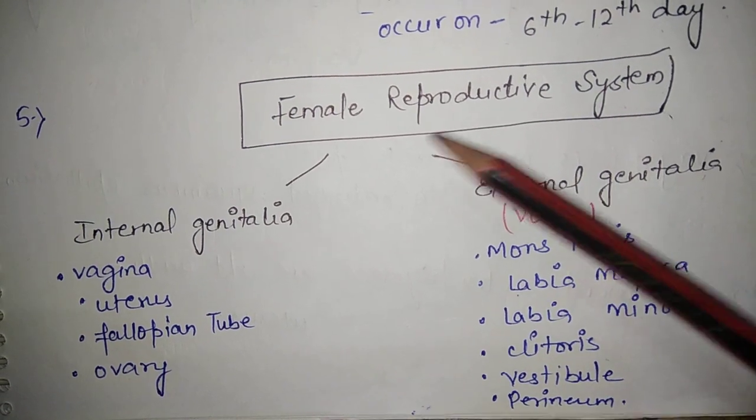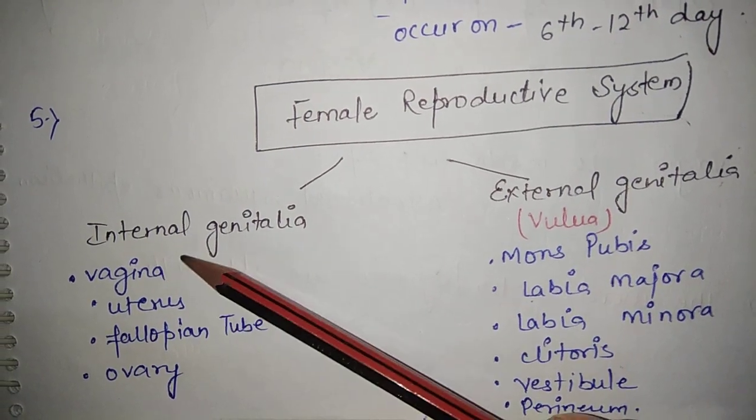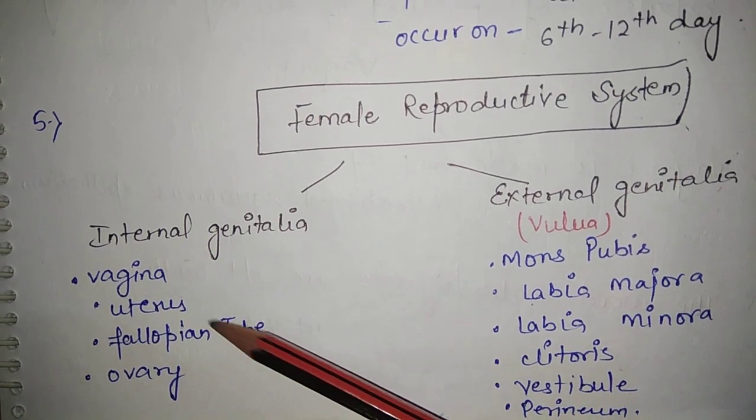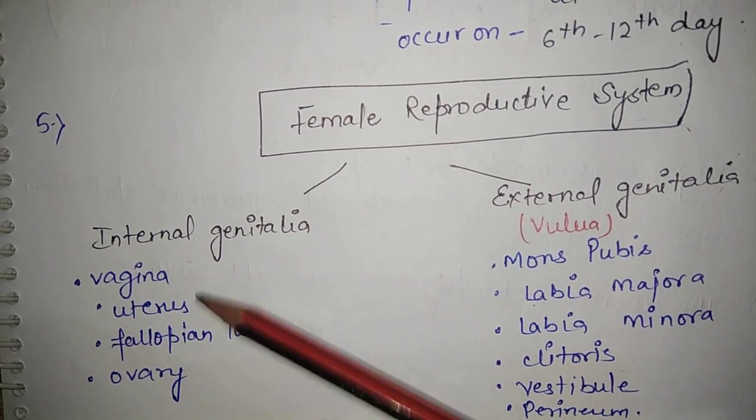Internal genitalia organs are vagina, uterus, fallopian tube, and ovary.